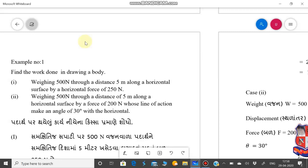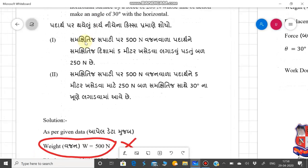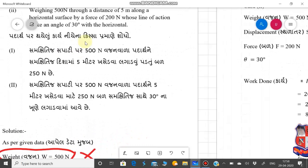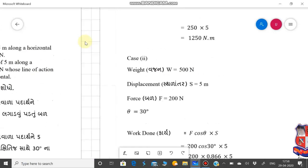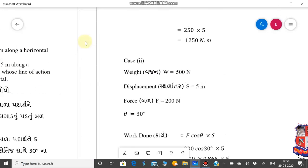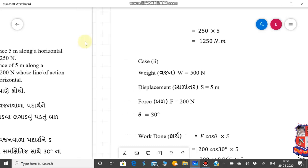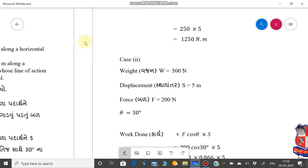Same way in English. Weighing of a body is 500 Newton through a distance of 5 meter along a horizontal surface by means of a force 250 Newton. So, this is the answer.